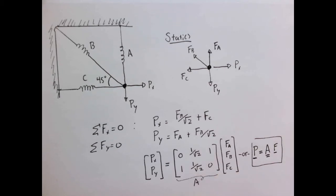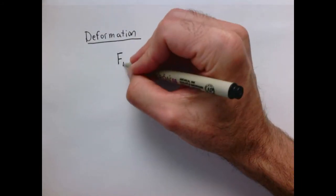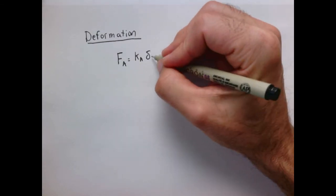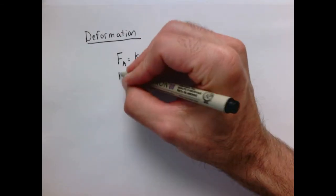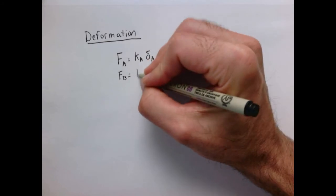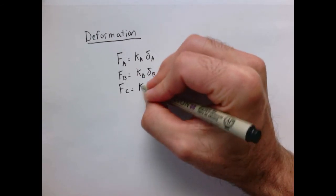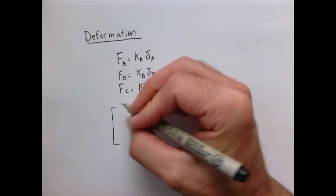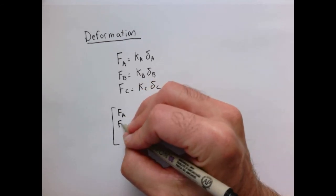For deformation, each element is just a spring, so the force in each spring is proportional to its displacement: F_A = k_A·δ_A, F_B = k_B·δ_B, F_C = k_C·δ_C. Writing this in matrix-vector form: F̄ = K·δ̄, where K is the diagonal stiffness matrix with entries k_A, k_B, k_C.